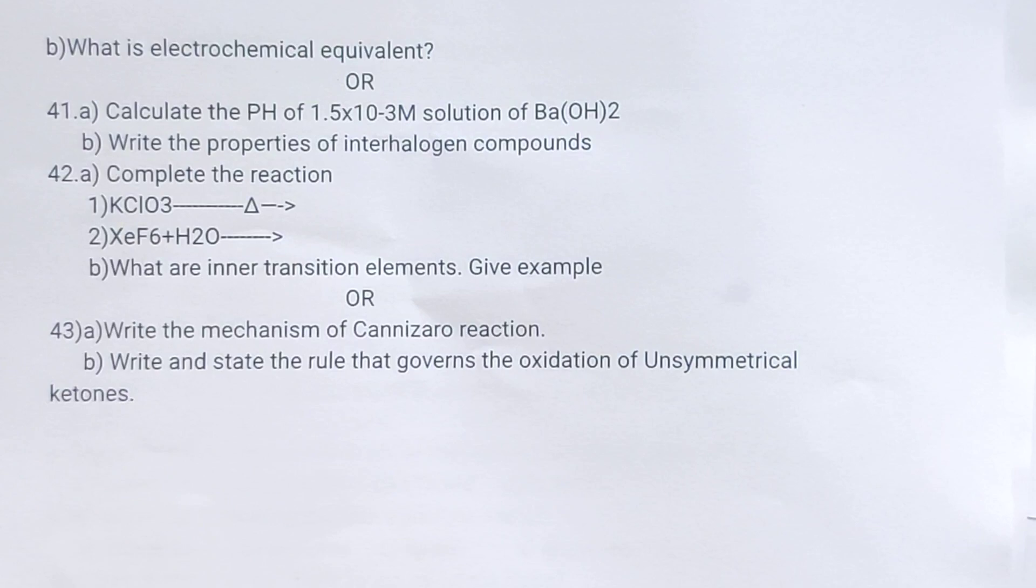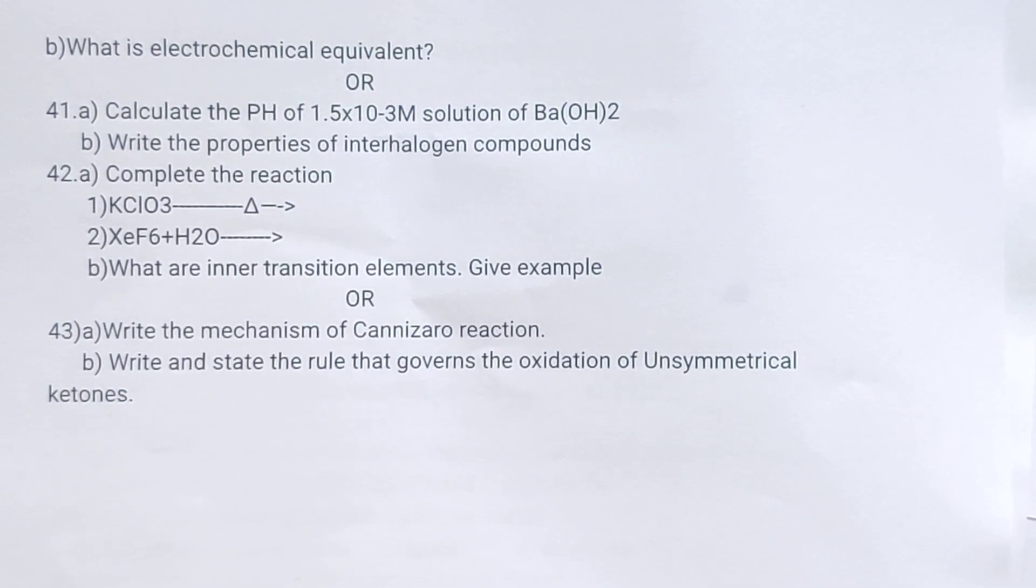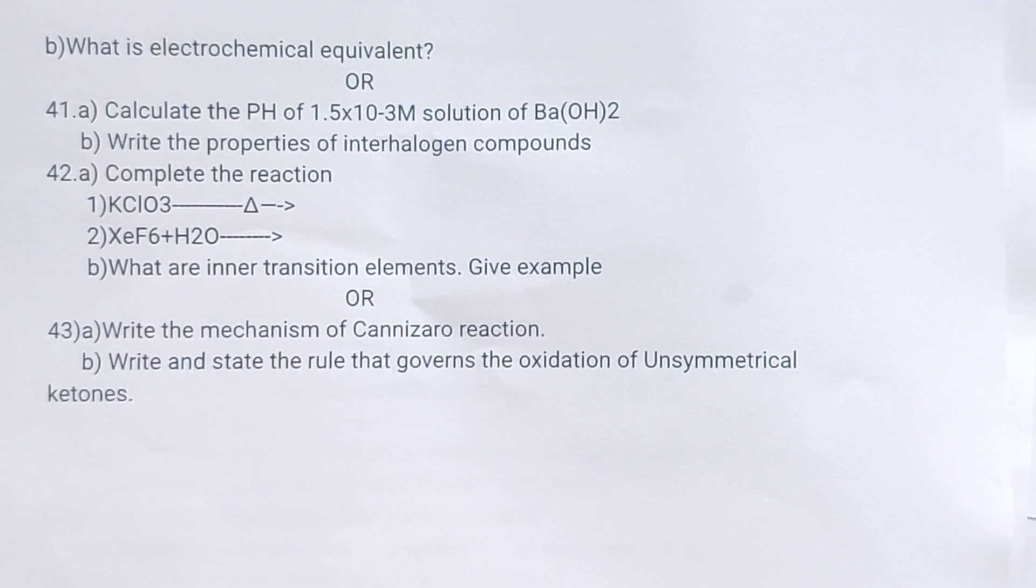What is electrochemical equivalent? Or 41 A: Calculate the pH of 1.5 into 10 power minus 3M solution of barium hydroxide. Write the properties of interhalogen compounds. 42 A: Complete the reaction. And B: What are inner transition elements? Give example. Or 43 A: Write the mechanism of Cannizzaro reaction. B: Write and state the rule that governs the oxidation of asymmetrical ketones.